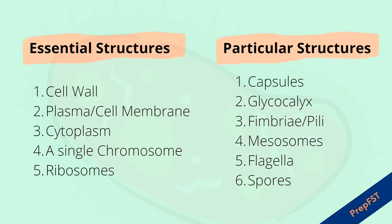Essential structures include cell wall, cell membrane, cytoplasm, chromosome, and ribosome. The particular structures that only some bacteria have include capsules, glycocalyx, pili, mesosomes, flagella, spores, etc.